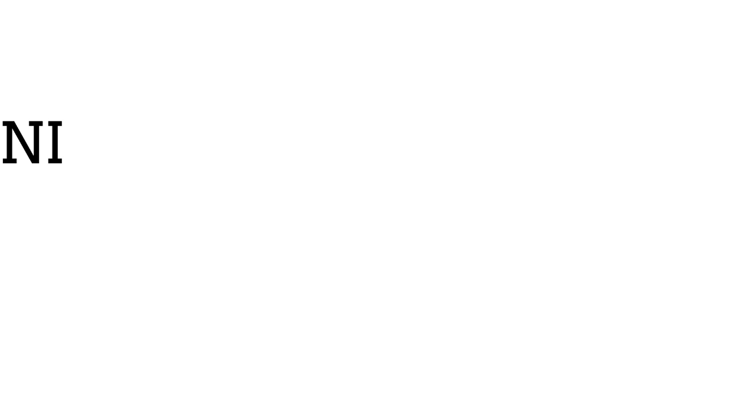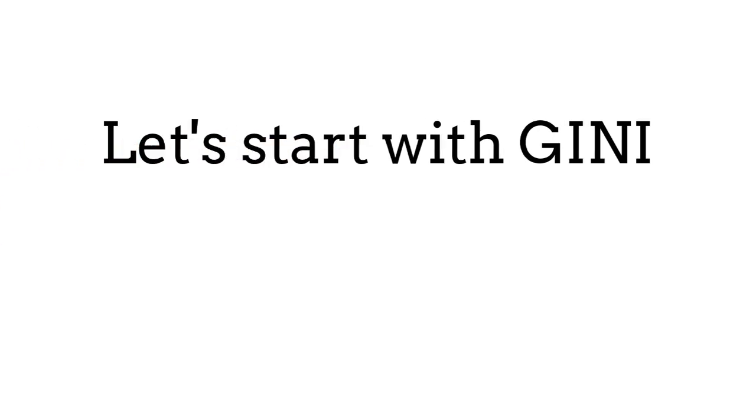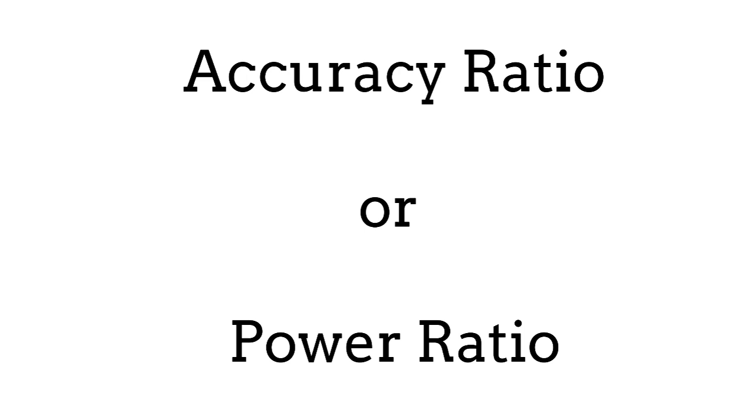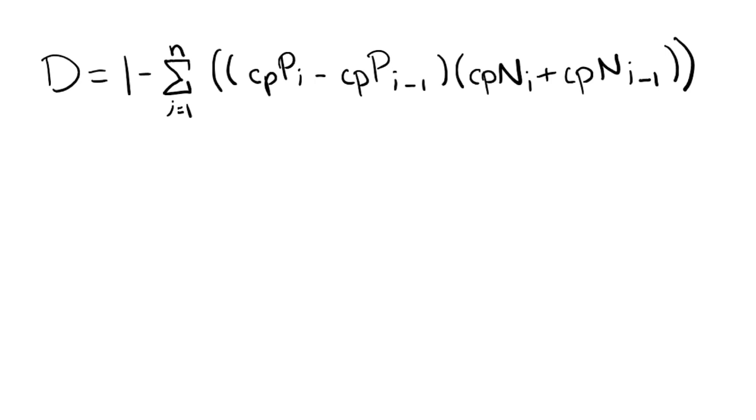Let's start with the Gini first. The Gini coefficient, also commonly referred to as the accuracy ratio or the power ratio, is used to measure how well a model is able to distinguish between good and bad customers. It does so by using this formula. If that looks confusing, don't worry. We'll explain it by example.